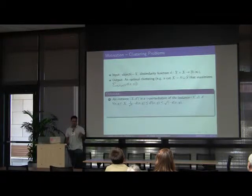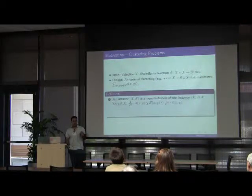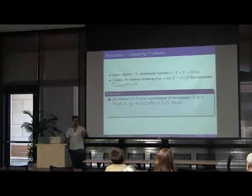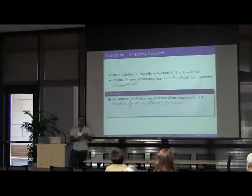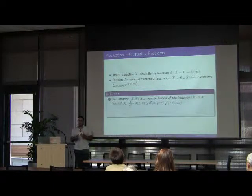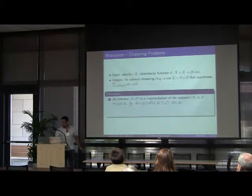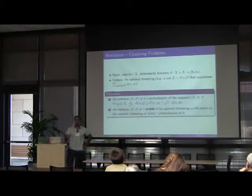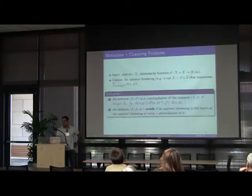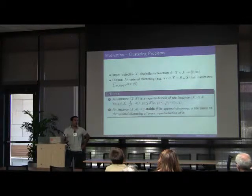That is, if we get an object xd, in order to generate a gamma perturbation of it, we are allowed to multiply each entry dxy by a number between 1 and gamma. Now we can define what is a stable instance. We say that an instance xd is gamma stable if its optimal clustering is the same as the optimal clustering of all of its gamma perturbations.